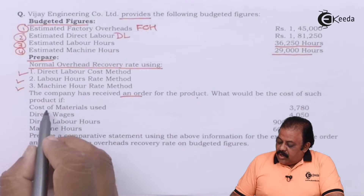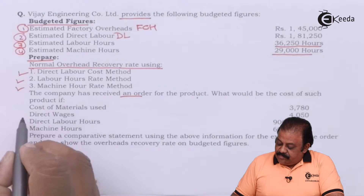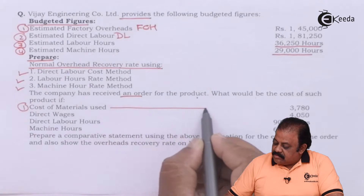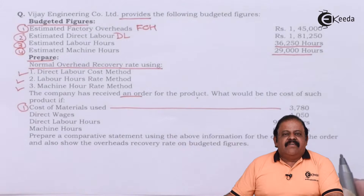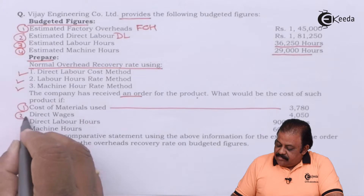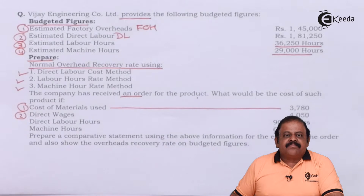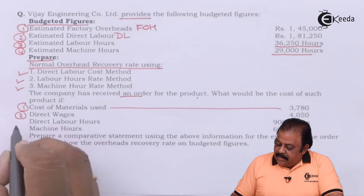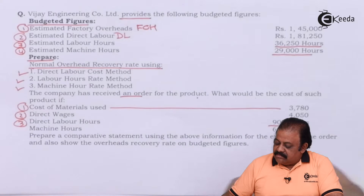The company has received an order for the product. What would be the cost of such product if cost of material used is 3,780, direct wages 4,050, direct labor hours 900 hours?